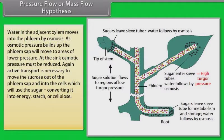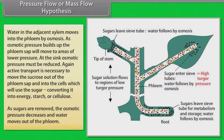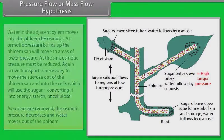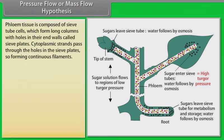As sugars are removed, the osmotic pressure decreases and water moves out of the phloem. Phloem tissue is composed of sieve tube cells which form long columns with holes in their end walls called sieve plates.